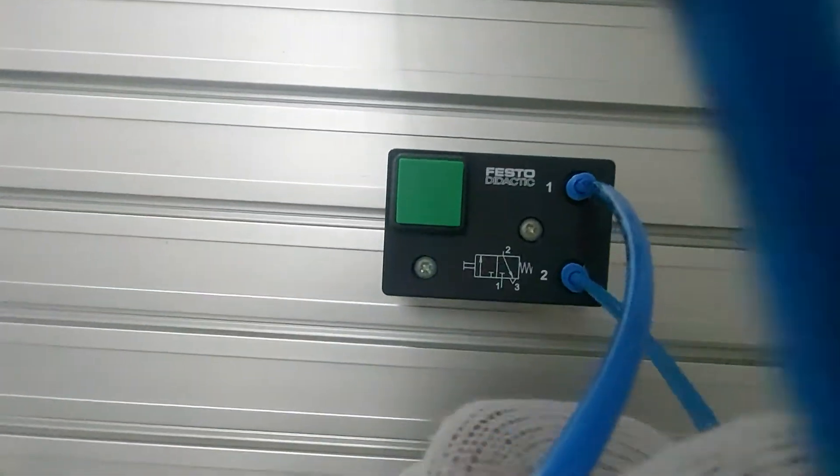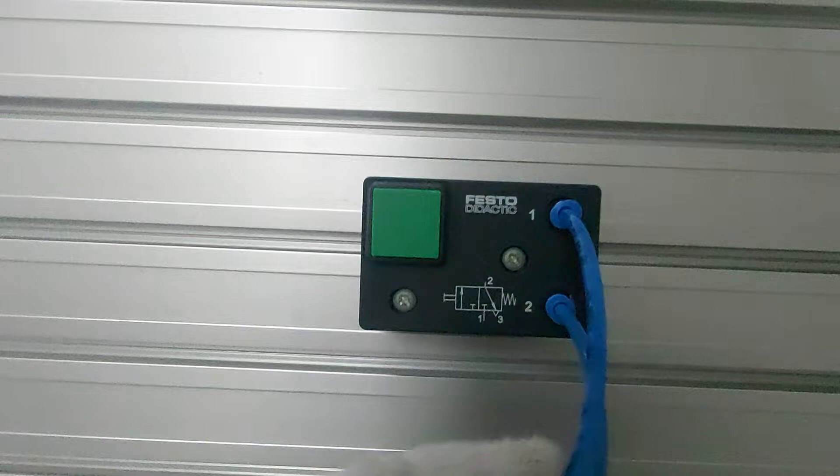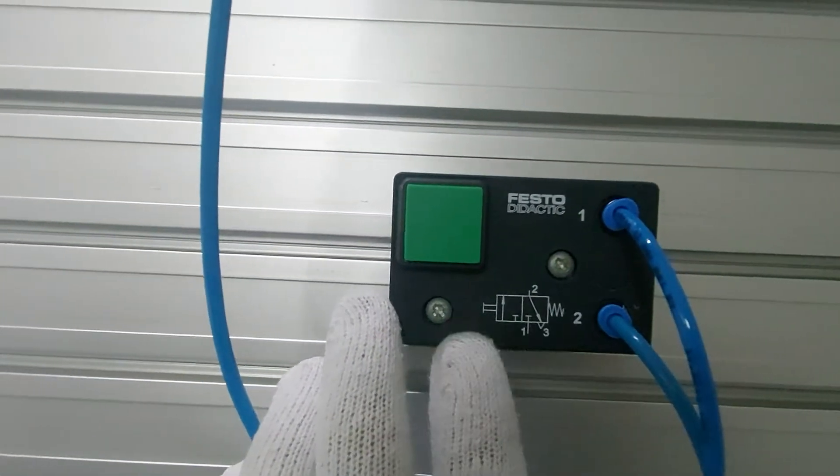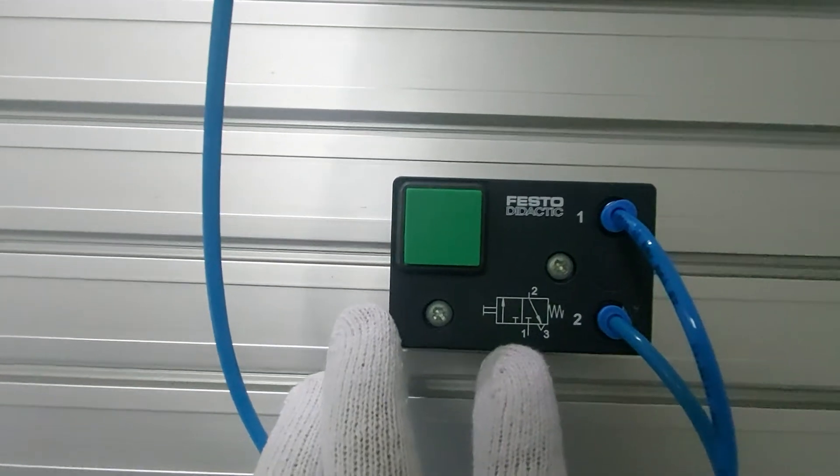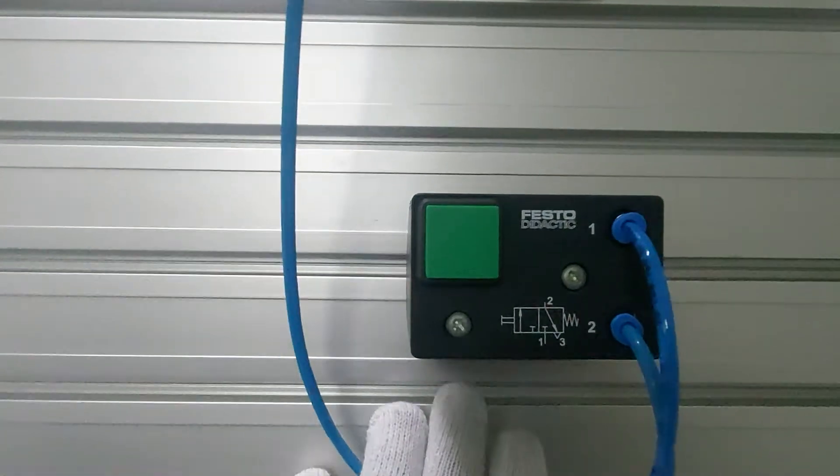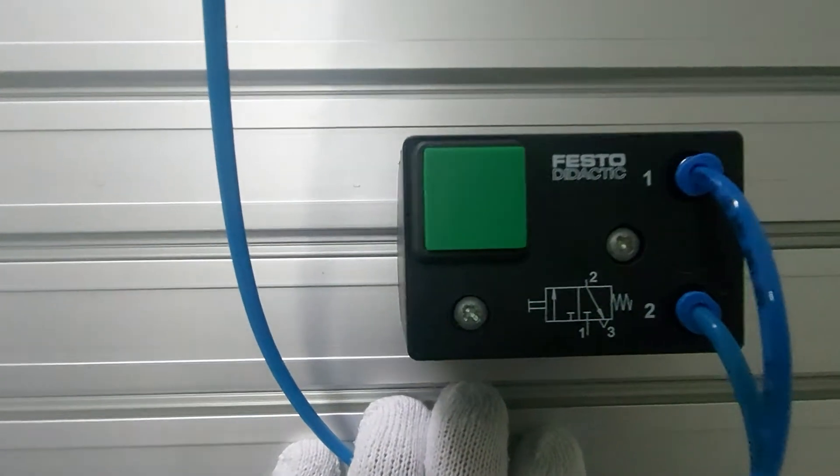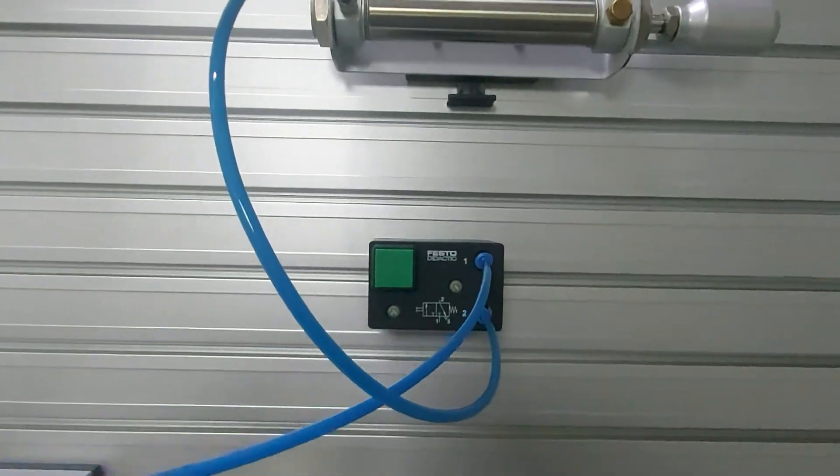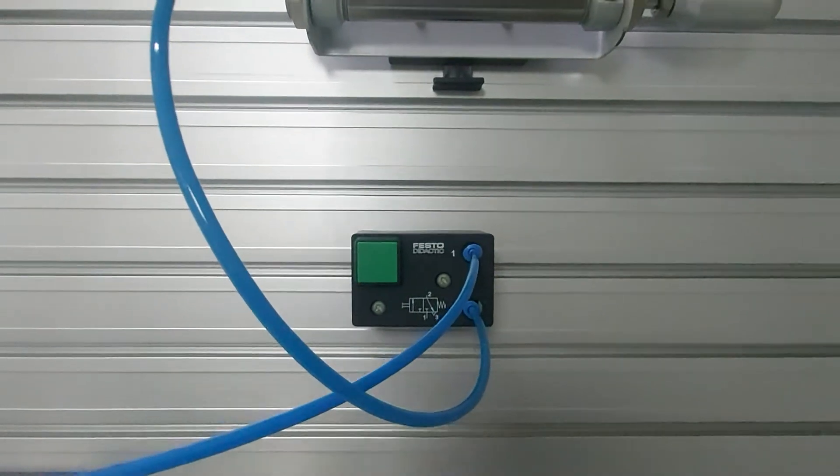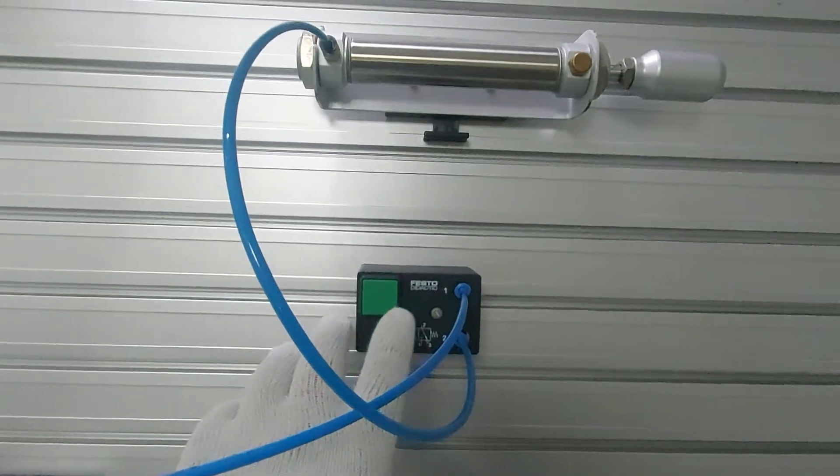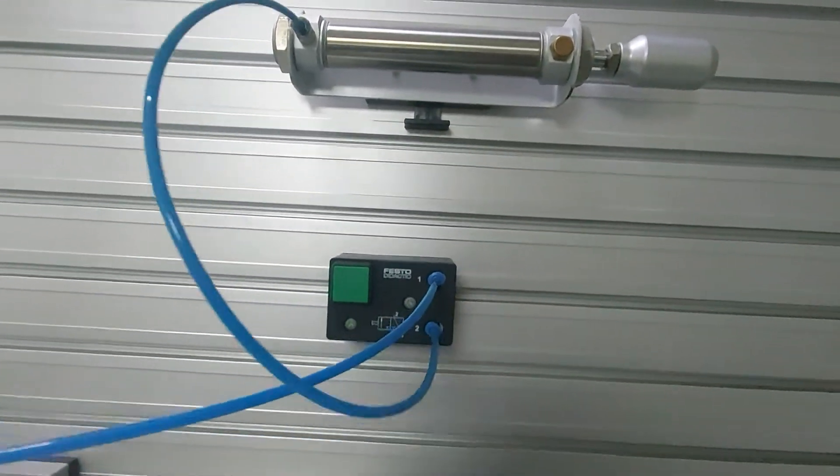What is the name of this valve? We can tell it by the circuit diagram. You see two rooms, which means two positions, and how many ports? One, two, three. Three ports. So the valve name will be three by two direction control valve. This is used for single cylinder, so this name will be three by two direction control valve with push button.